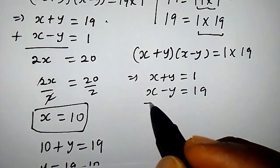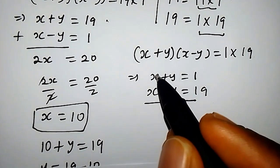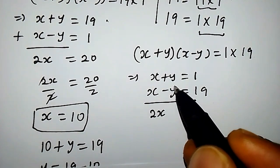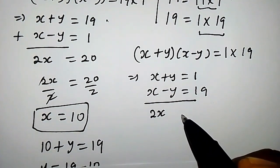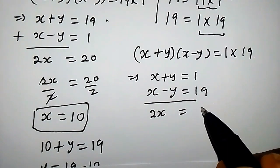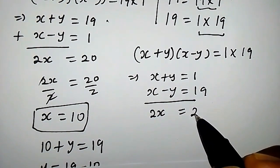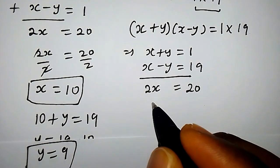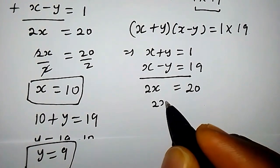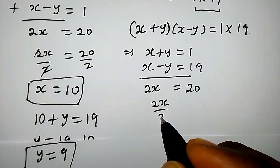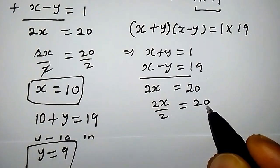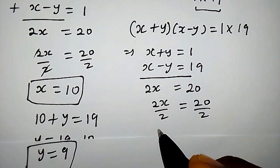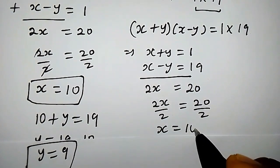Adding these two equations: x plus x is 2x, y minus y is 0, equals 1 plus 19, that is 20. Dividing both sides by 2, x equals 10.